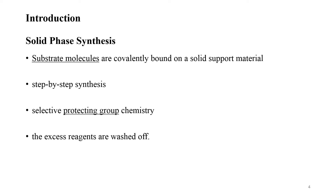What is solid phase synthesis? In the basic method, building blocks that have two functional groups are used. One of the functional groups of the building block is usually protected by a protecting group. The starting material is a bead which binds to the building block. First, this bead is added into the solution of the protected building block and is stirred. After the reaction between the bead and the protected building block is completed, the solution is removed and the bead is washed. This is a step-by-step synthesis.